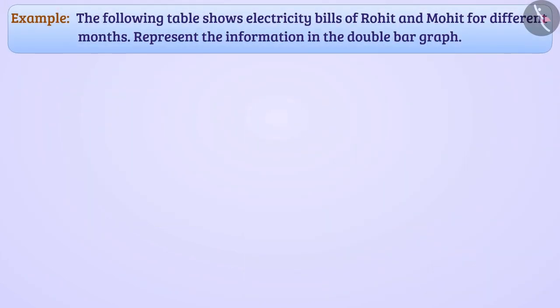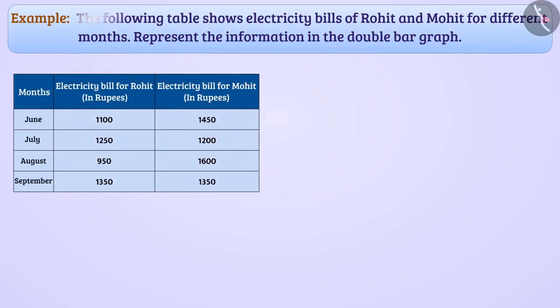Next example. The following table shows electricity bills of Rohit and Mohit for different months. Represent the information in the double bar graph. Observe the statistics. Can you tell me what would be the convenient scale here?